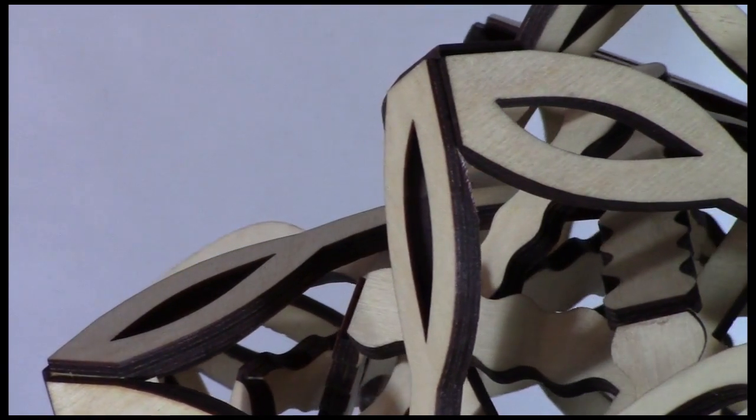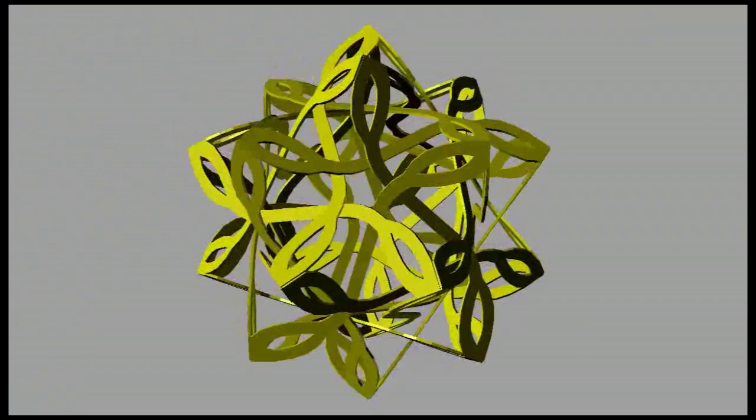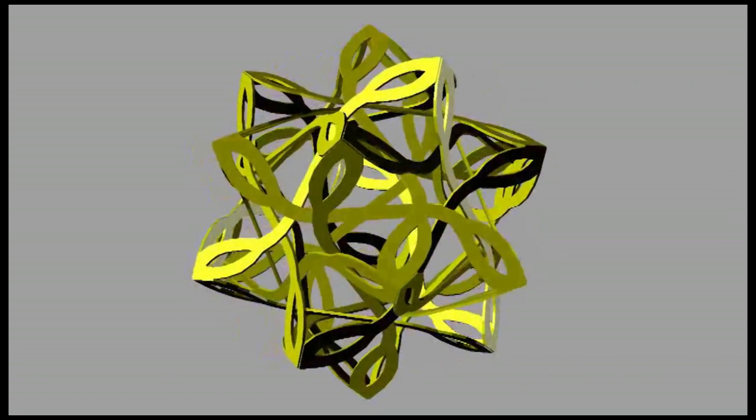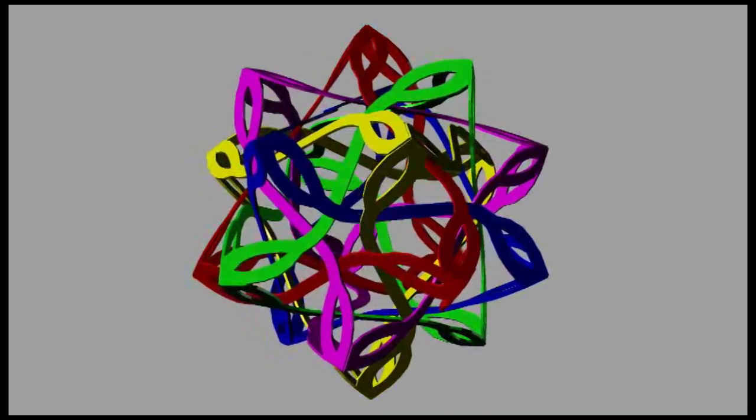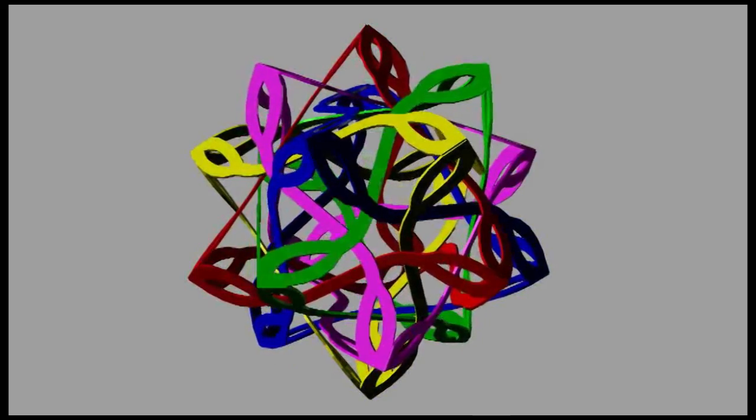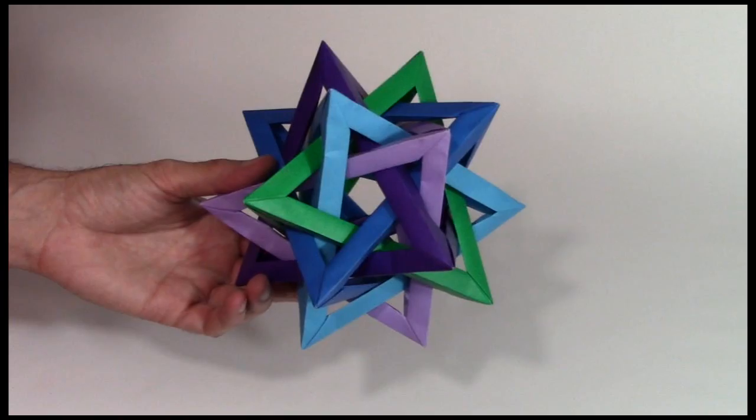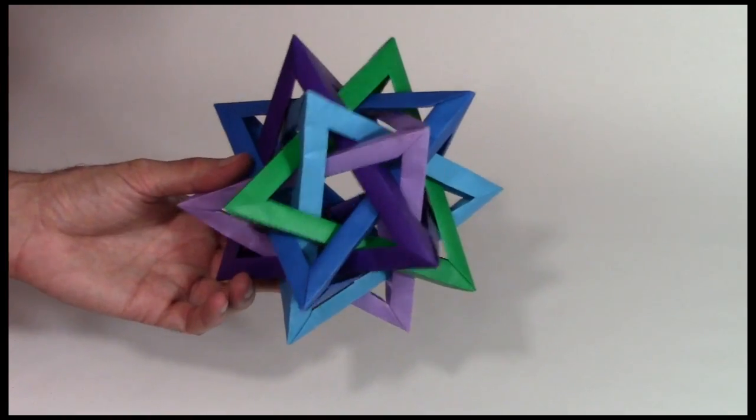Now ignore the inner pentagons for a minute and look at the outer part of the sculpture. What's interesting is that this is also made of disconnected components. There are five separate parts with space to move relative to each other.